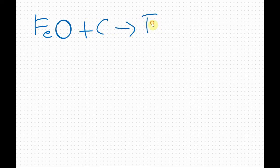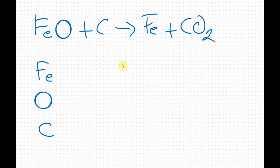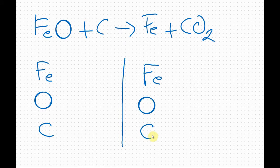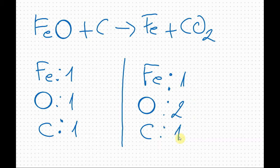Here is another example. I will do the chart first. On the left side I have iron, oxygen, and carbon. On the left I have one iron, one oxygen, and one carbon. On the right side I have one iron, two oxygens, and one carbon.